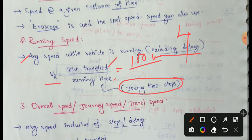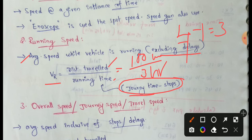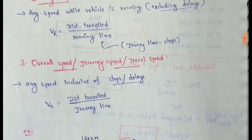For example, if total journey time is 4 hours and stops account for 1 hour, then running time equals 4 minus 1 equals 3 hours. So running speed equals 100 km divided by 3 hours.